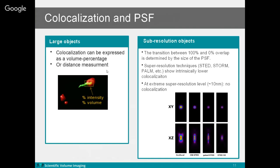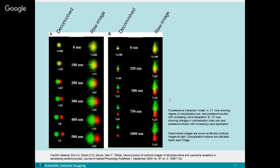For example, if I perform co-localization analysis on a confocal image and compare it to the same image captured with a STED super-resolution system, the confocal image will show much higher co-localization coefficients than the STED image — both results are correct, but they are influenced by the PSF of the microscope system. When resolution becomes extremely high, we should use the distance between molecules rather than overlap to determine if they interact.